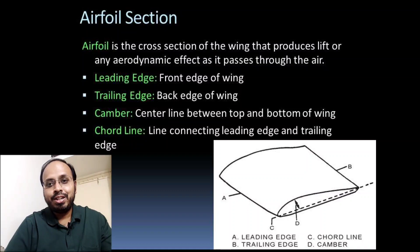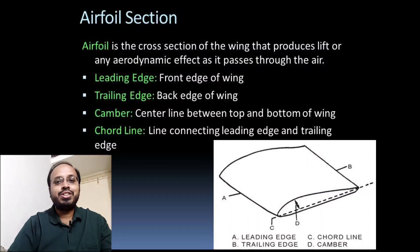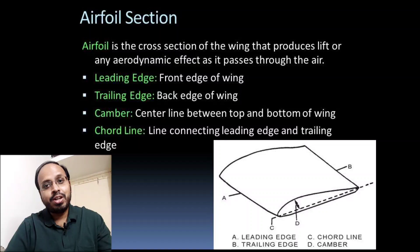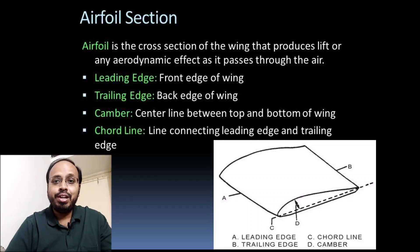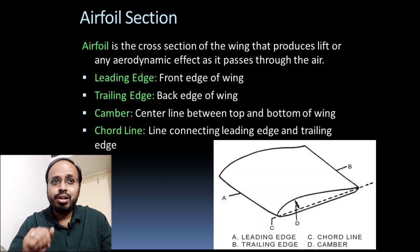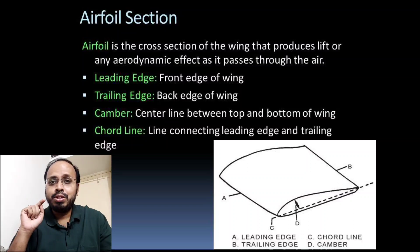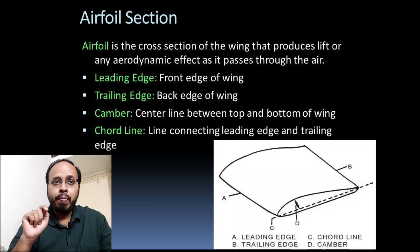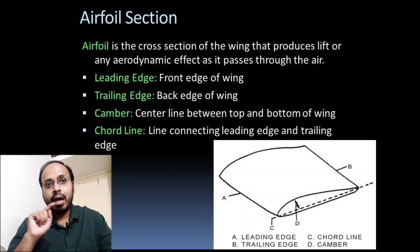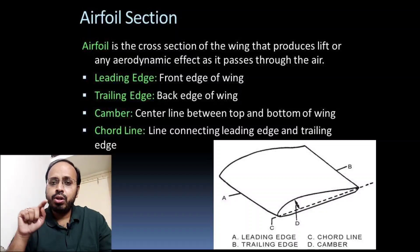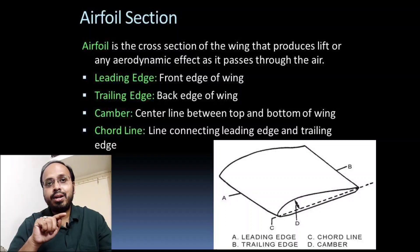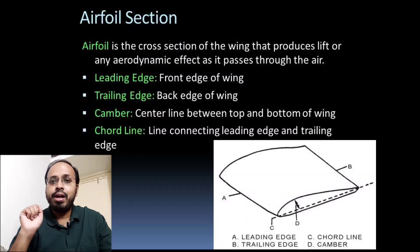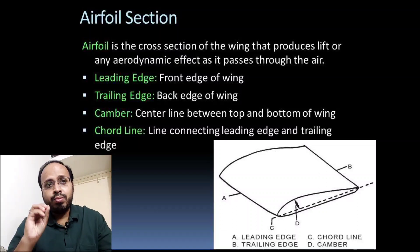The airfoil section is very important for producing lift using Bernoulli's principle. The airfoil section is the cross section of the wing that produces lift or aerodynamic effect as it passes through the air. The leading edge is the front edge of the wing, the trailing edge is the back edge, the camber is the central line between the top and bottom of the wing, and the chord line connects the leading edge and trailing edge of an airfoil.